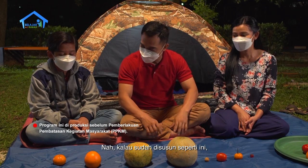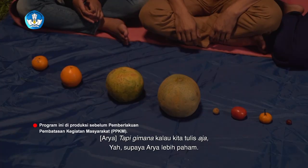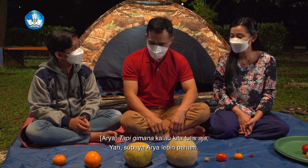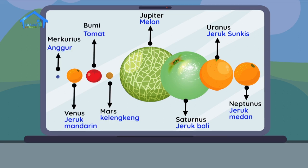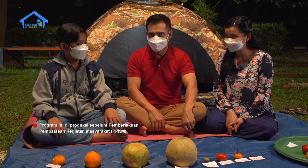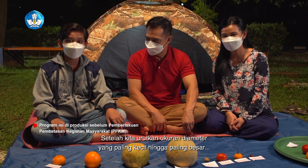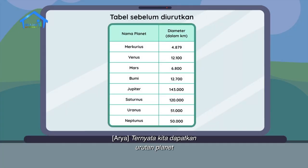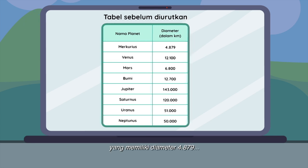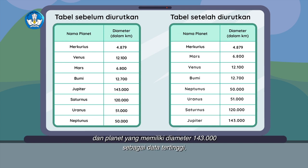Kalau sudah disusun seperti ini, Arya akan lebih mudah untuk memahami ilustrasi perbandingan planet-planet di Tata Surya kita. Gimana kalau kita tulis aja ya, supaya Arya lebih paham. Setelah kita urutkan ukuran diameter yang paling kecil hingga paling besar, hasilnya sebagai berikut: planet yang memiliki diameter 4.879 sebagai data terendah yaitu Merkurius, dan planet yang memiliki diameter 143.000 sebagai data tertinggi yaitu Jupiter.